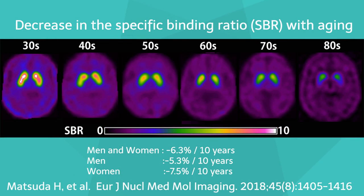The specific binding ratio in the striatum decreases with age as dopamine levels in the brain decline. In healthy individuals, the specific binding ratio declines at a rate of about 6% per decade — approximately 7% per decade in women and about 5% per decade in men.